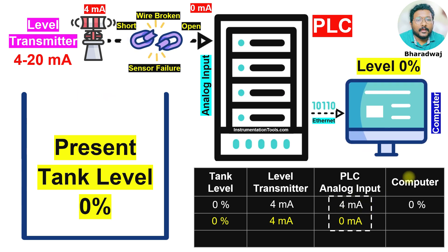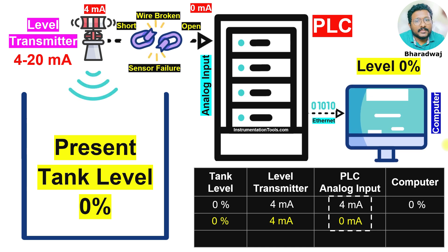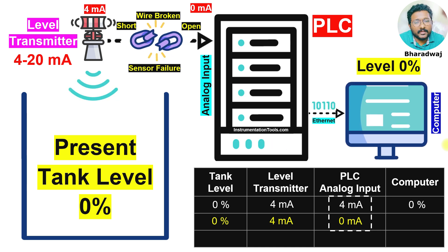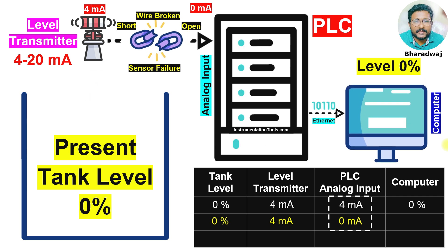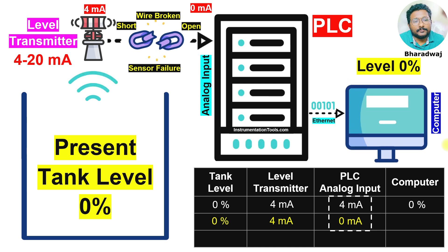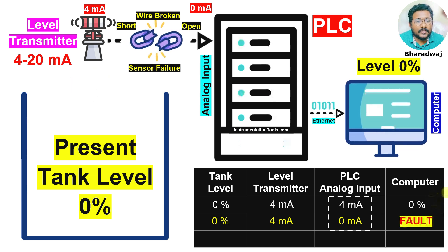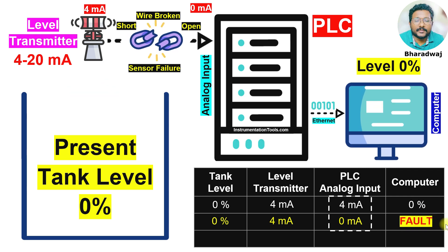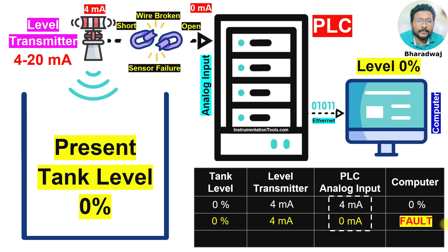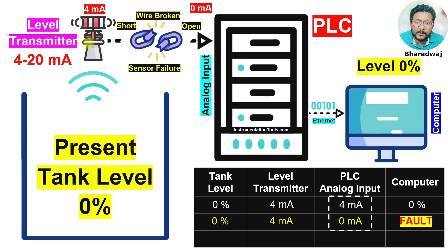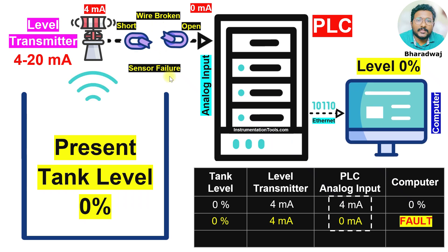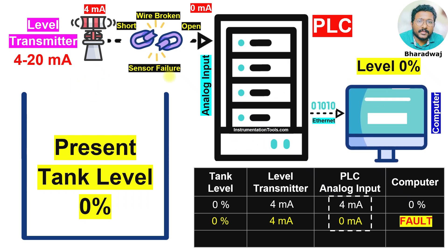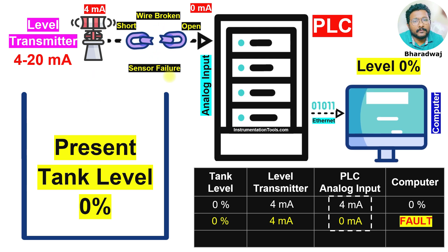The PLC then updates the computer that this transmitter is in a faulty state — do not consider the readings. It will not update the readings; instead it will update the status of the transmitter that there is a problem, there is a fault. That is why the computer status shows faulty state for the level transmitter. There may be a broken wire, short circuit, sensor failure, or some other reason — whatever the problem is, the PLC displays it as a common fault state.